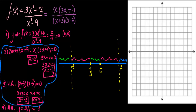Let's test values in each region. For negative infinity to negative 3, I choose x = negative 4. In the numerator, I get a negative times a negative, which is positive. In the denominator, negative times negative is also positive. Positive over positive is positive, so the graph is above the x-axis in this region.